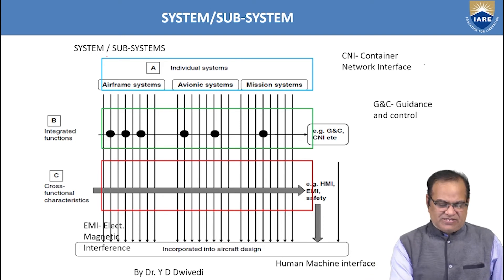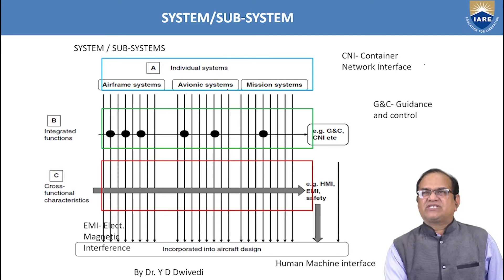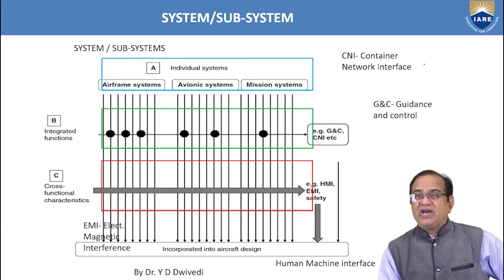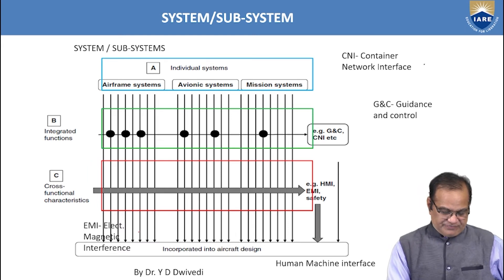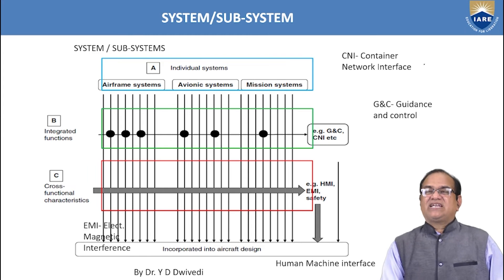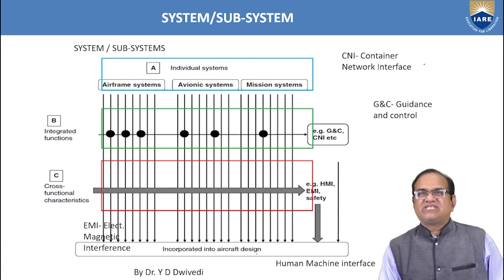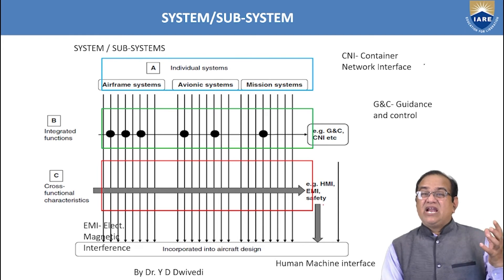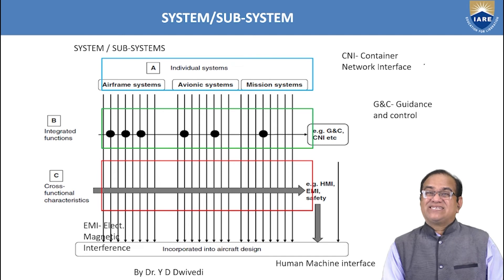The system hierarchy shows airframe systems, avionic systems, and mission systems. In mission systems, G&C stands for guidance and control, and CNI stands for container network interface. HMI is human machine interface and EMI is electromagnetic interference. These interfaces relate to safety — the system must be safe so the aircraft works properly, and avionic systems must be integrated into the aircraft design free from electromagnetic interference.